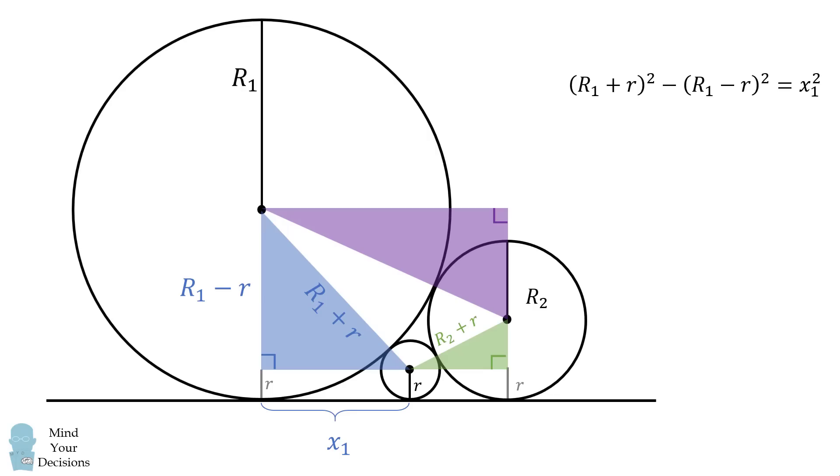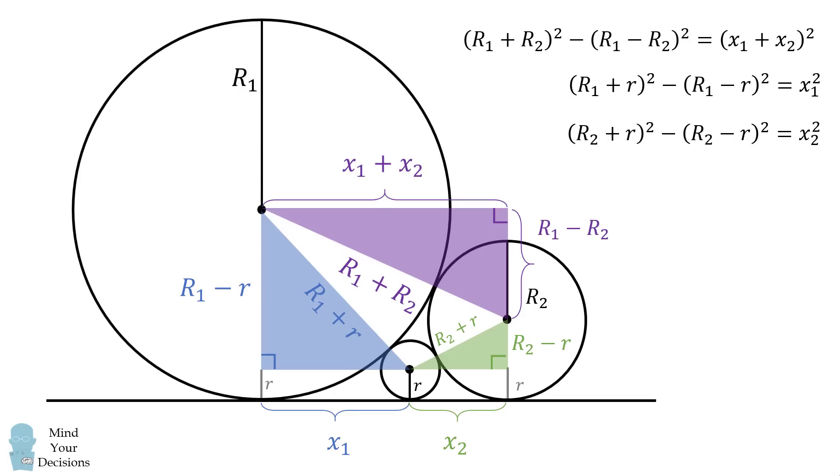We'll do the same thing for the green triangle. We have x2 expressed using the Pythagorean theorem. And now, in this third triangle, which is in purple, we can solve for this leg as the sum of x1 plus x2, and we can also use the Pythagorean theorem.